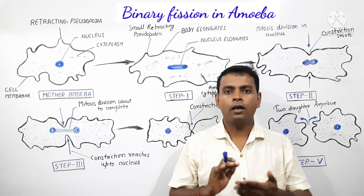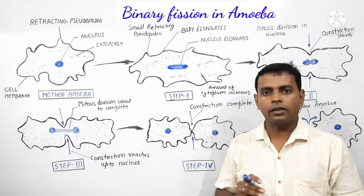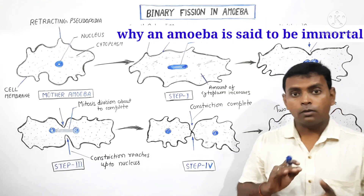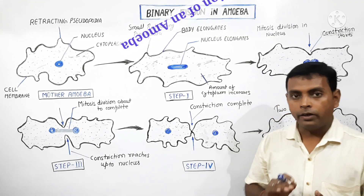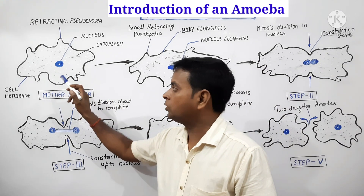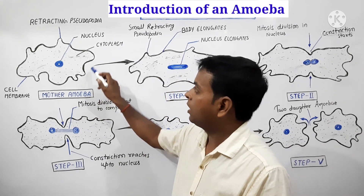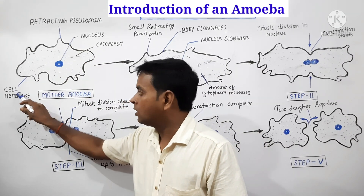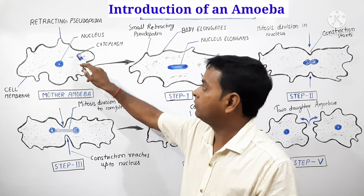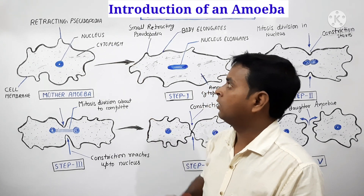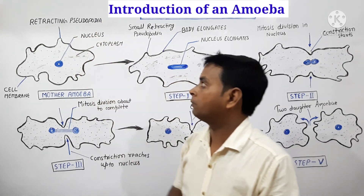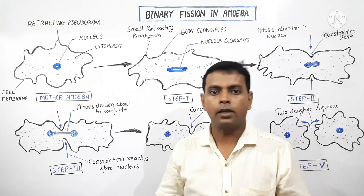In this video tutorial, I am going to describe the process of binary fission in amoeba and some related questions, like why an amoeba is immortal. First, let me introduce you to amoeba. Amoeba is a unicellular eukaryotic organism which is surrounded by a membranous structure known as the cell membrane. It generally has a single nucleus. The liquid content of this amoeba is known as cytoplasm, and it has some projections known as pseudopodia.